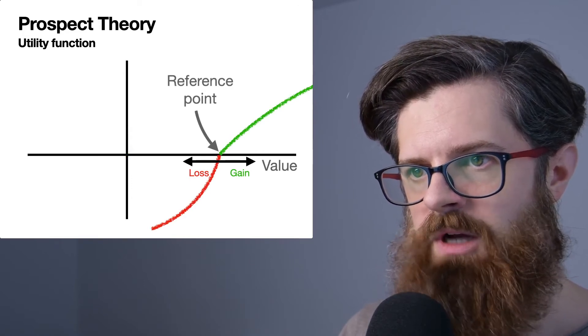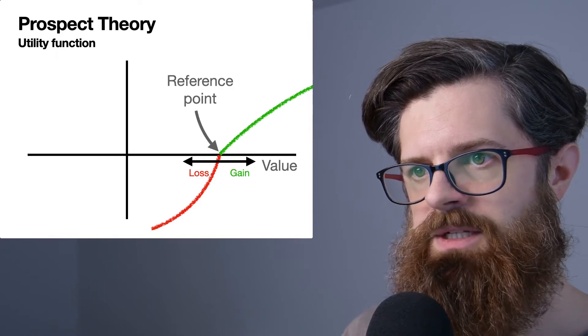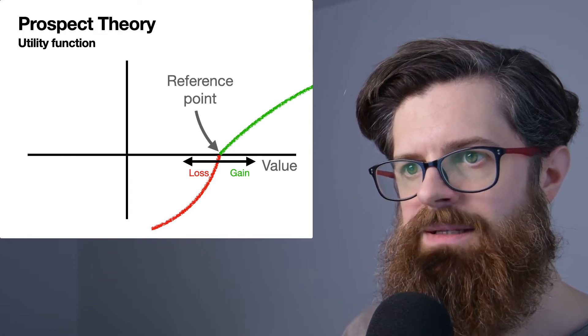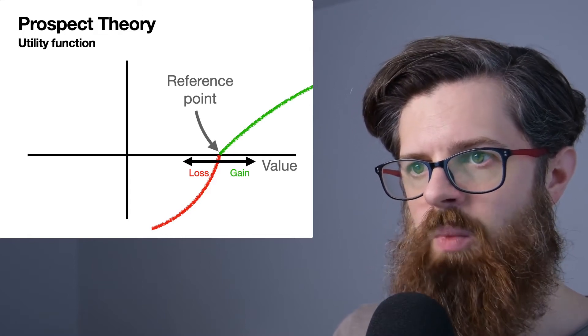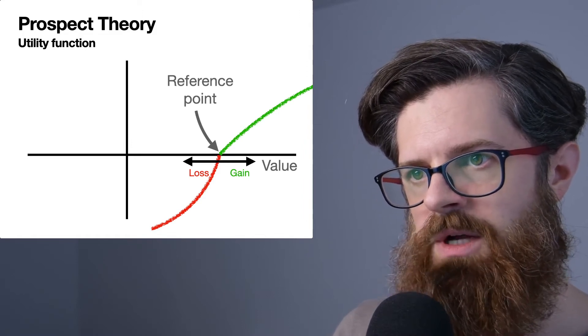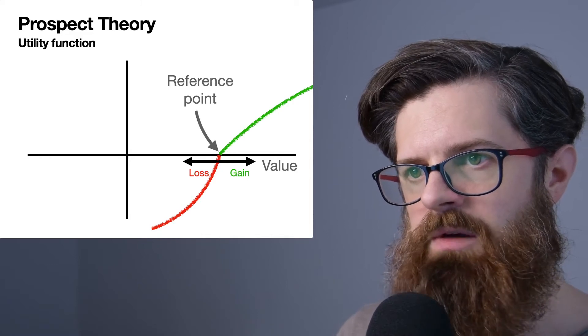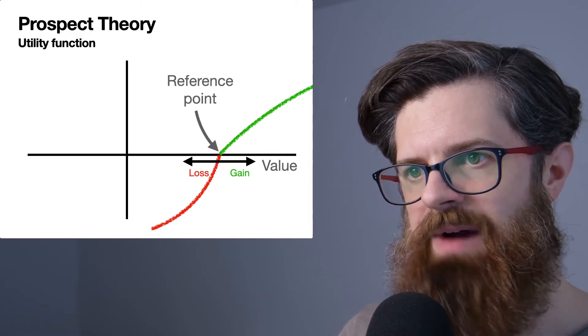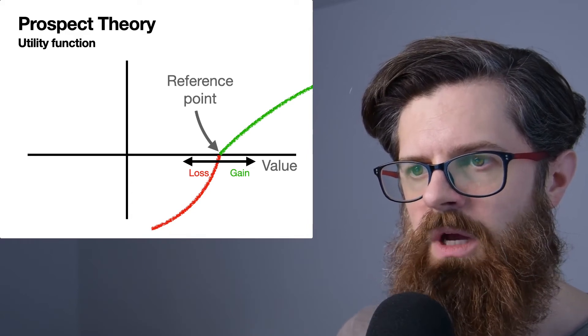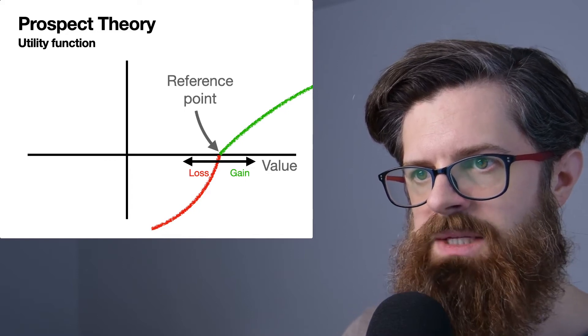For example, this might represent someone's subjective value function who already has a higher amount of wealth than what we saw in the previous graph. This person's reference point would be at a higher amount—you could think of it in terms of their bank account value.